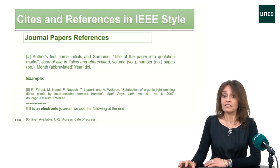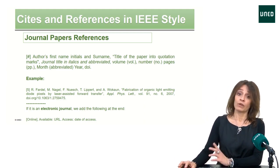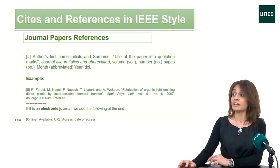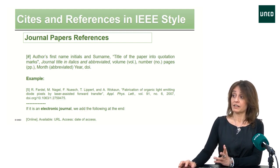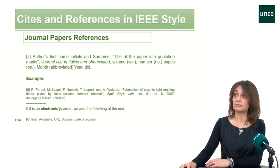If it is an electronic journal, we add the following at the end: 'online' in square brackets, 'available at' the corresponding URL, and the date of access.